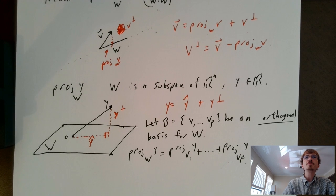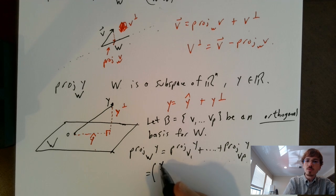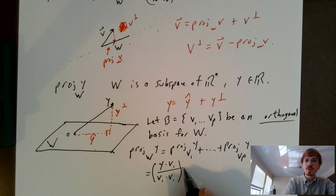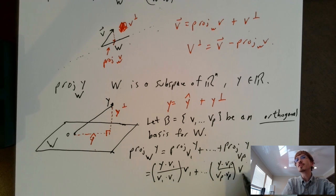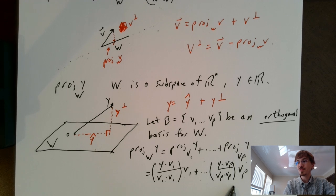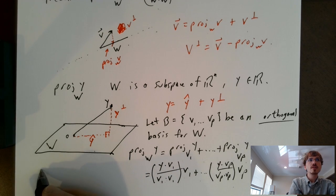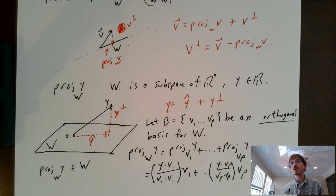Let's write this out explicitly. The projection of y is y dot v1 divided by v1 dot v1 times v1, plus all the way down to y dot vp over vp dot vp times the vector vp. These coefficients are all scalar quantities. So we have indeed written the projection of y onto W as a linear combination of vectors in W, which means the projection of y onto the subspace W is certainly going to be in the subspace W.